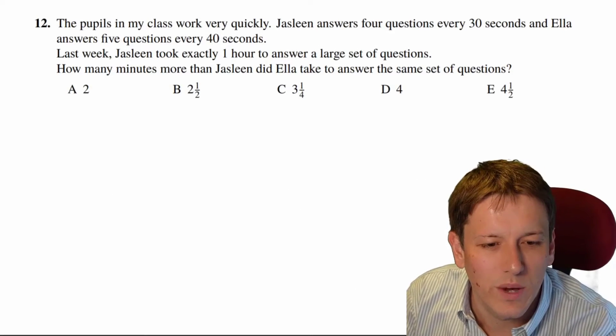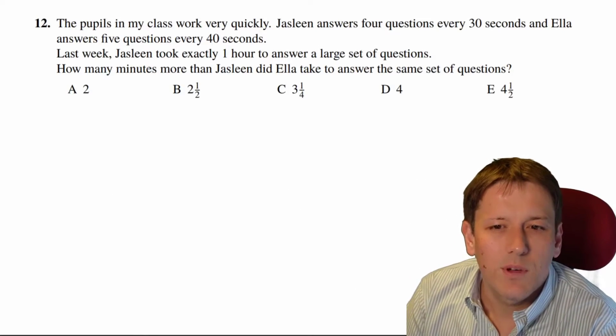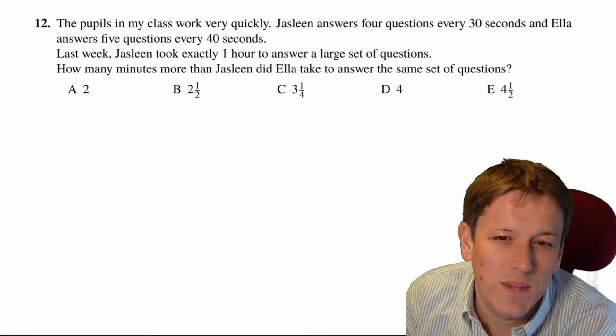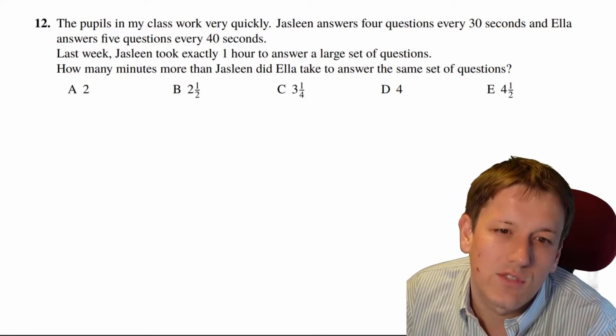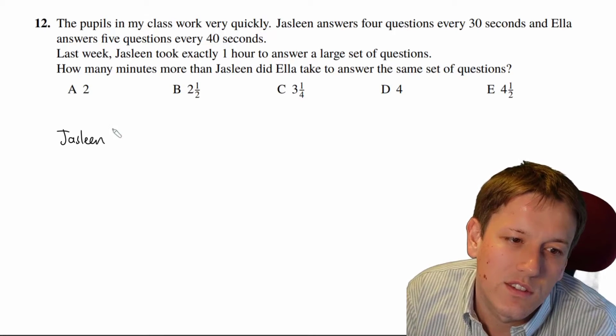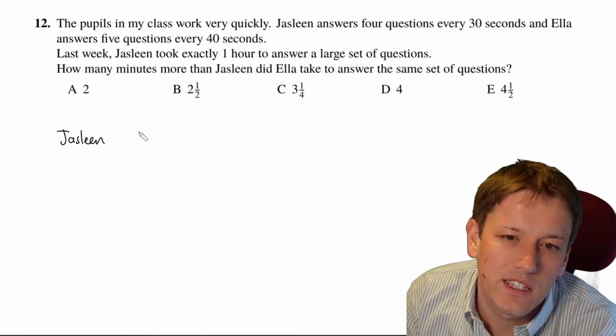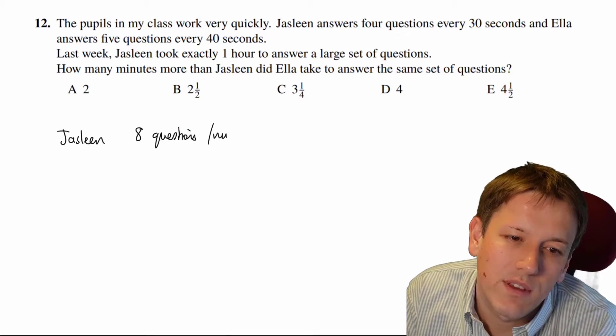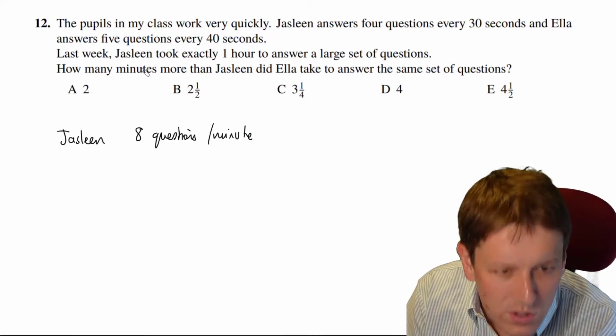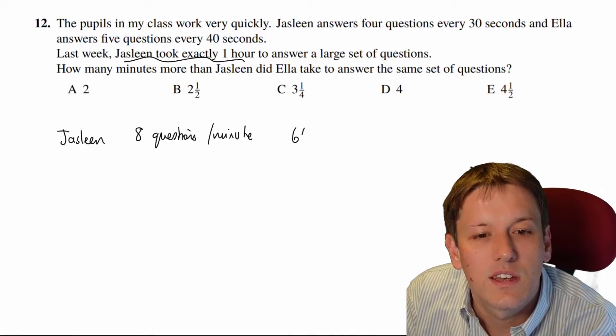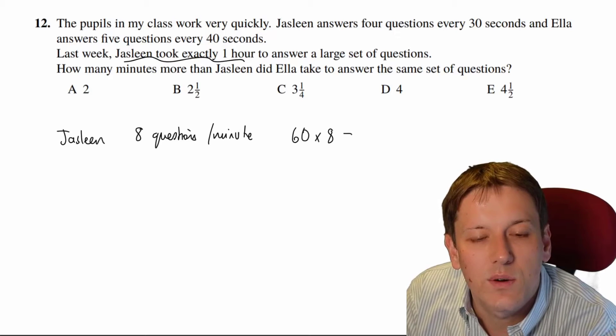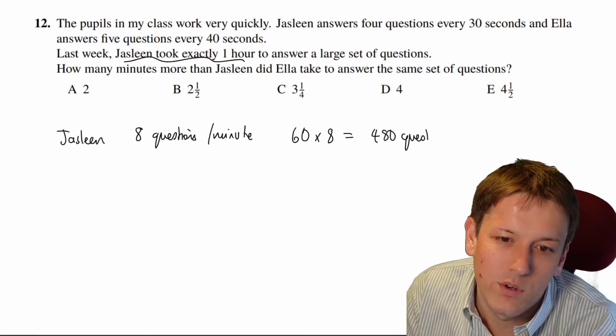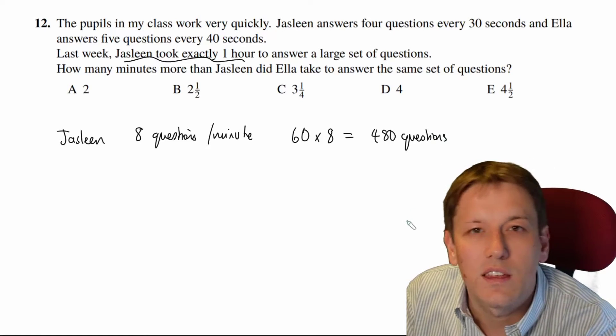I'm going to do this question in two ways. The most obvious way to do it I think is to turn these bits of information into minutes. So Jasleen who answers four questions every 30 seconds, we could also say answers eight questions every minute. So if Jasleen takes exactly one hour to do this that's 60 minutes times 8 questions. Six times eight is 48 times 10 is 480 so there must be 480 questions in this paper.